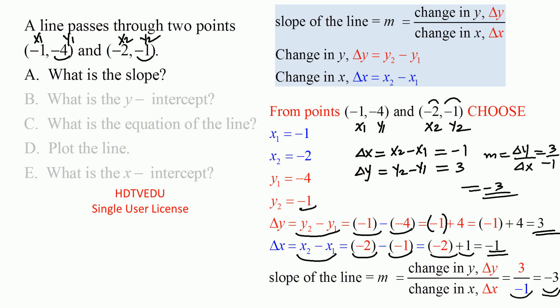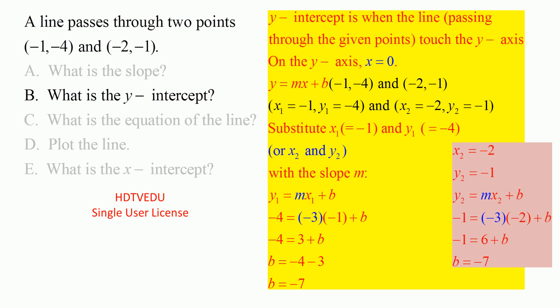We are done with part a. The slope is negative 3. What does that mean? It means for every one step you take to the right — going from left to right along the horizontal — you come down by three. So for every one step to the right you come down by three, and that traces the line.